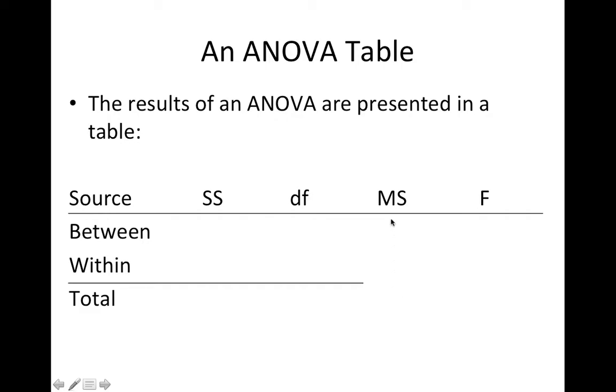Then we're going to take the ratio of the mean squares, which are variances. Remember, mean square is a synonym of variance. One variance divided by the other variance will give us our F ratio. Then we can use Excel to get our p-value.